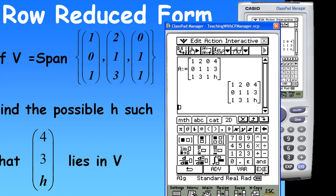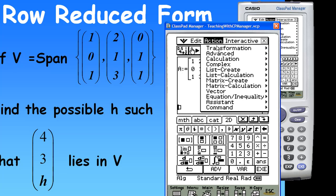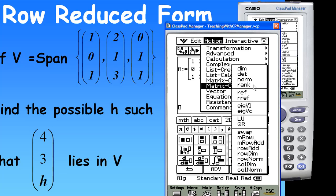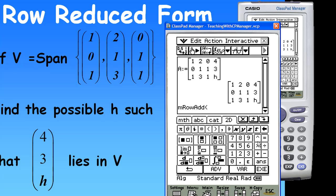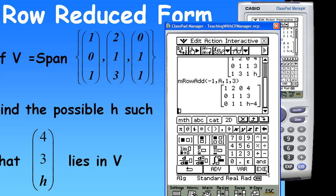Now, I want to do some row operation of matrix A. I want to take the first row of A times minus 1, add to the third row. So, I'm going to take action, matrix calculation, mRowAdd, minus 1 times first row of A, add to the third row. So, press EXE, so I have this new matrix now.